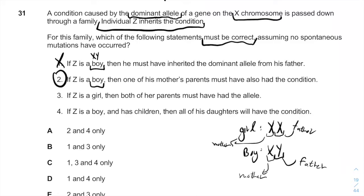If Z is a girl, then both of her parents must have the allele. As we said, the dominant allele can only be inherited from one of the parents — one allele is enough to show the phenotype and disease. So one parent is enough to give the girl the affected X allele for her to show the condition. Therefore option three is not correct.